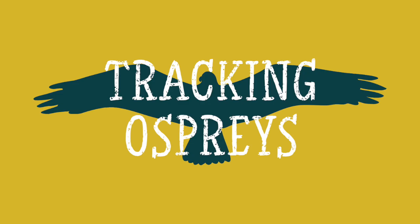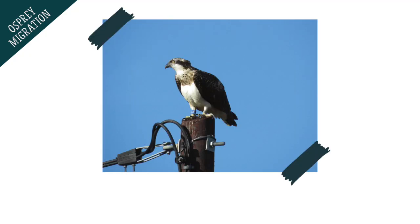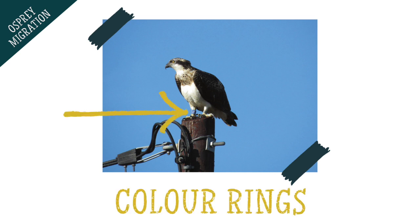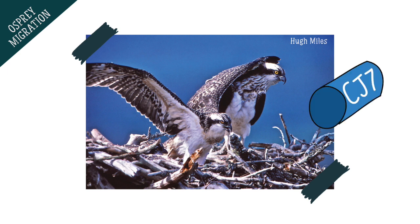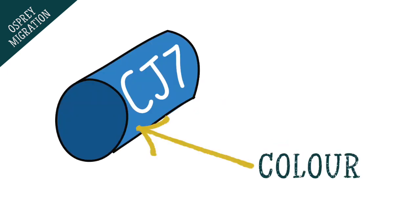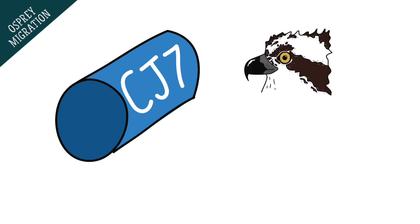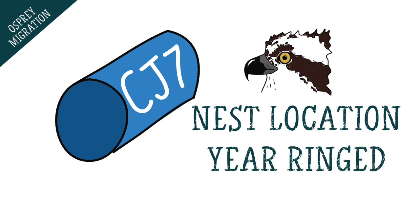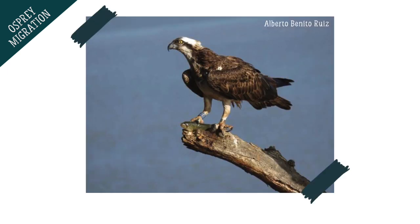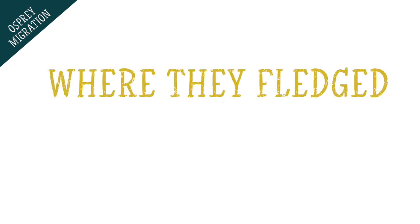Well there are a couple of ways we can track ospreys. A really simple way is through coloured leg rings. Before osprey chicks learn to fly, some of them are briefly collected from the nest and fitted with a small coloured ring on their leg. This ring will have a unique code and colour combination which allows you to identify them once they have left the nest. Their code and information such as their nest location and the year they were ringed is all stored in a big database. This is really useful because if an osprey is seen or photographed in another country and their leg ring is spotted, we are able to find out information about them including where they fledged and how old they are.